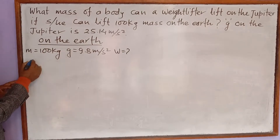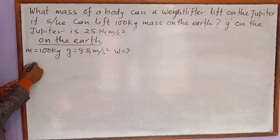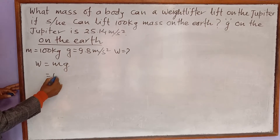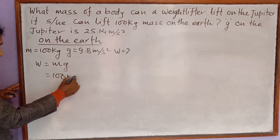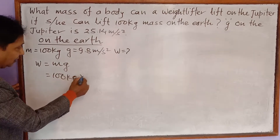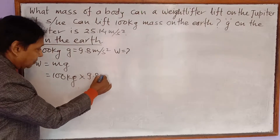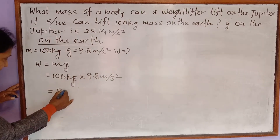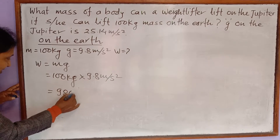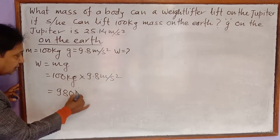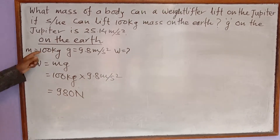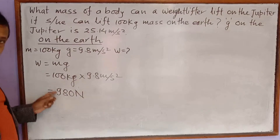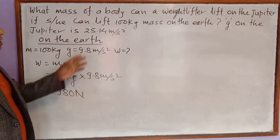Now, what is the weight of this 100 kg mass? We find: W = mg, where mass is 100 kg and g is 9.8 meters per second square. Multiplying these gives 980 kg·m/s², which is Newtons. So the weight of this 100 kg mass is 980 Newtons on Earth.